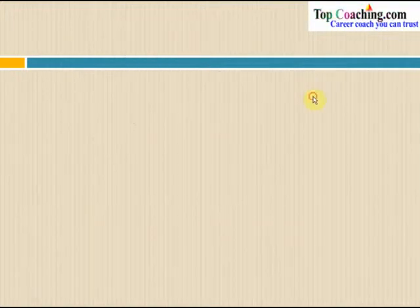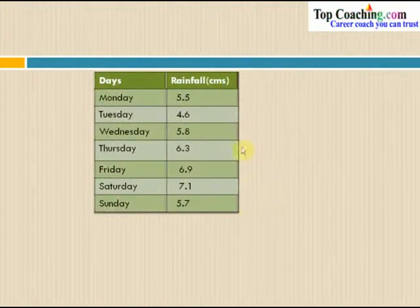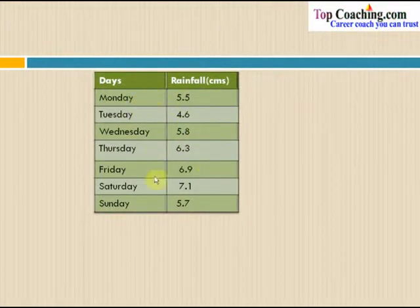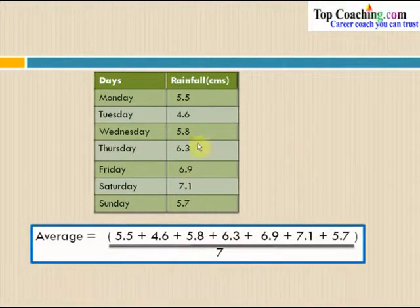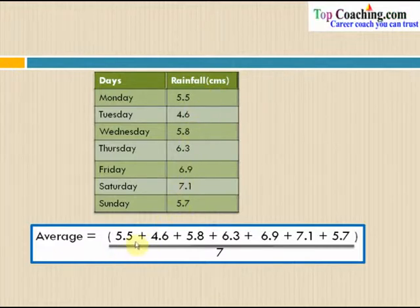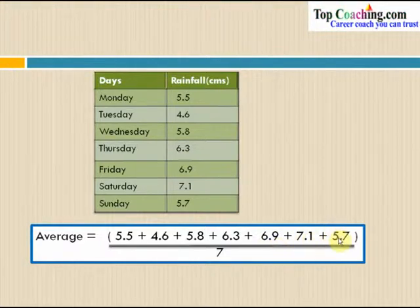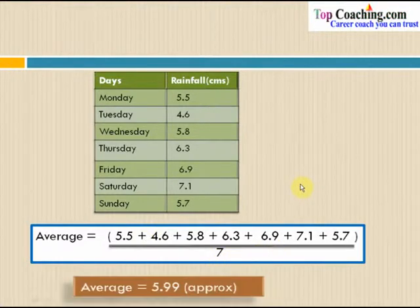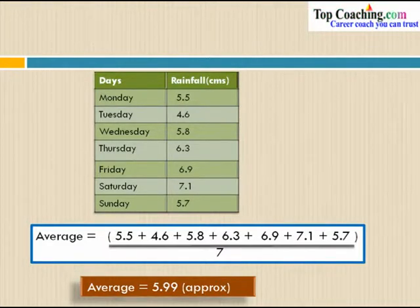Let's solve the first question — finding the average rainfall for the entire week. Average equals sum of all entries divided by the total number of entries. So we add 5.5 + 4.6 + 5.8 + 6.3 + 6.9 + 7.1 + 5.7 and divide by 7 total days. The average comes out to be approximately 5.99. So the mean rainfall for the entire week is approximately 5.99 cm.